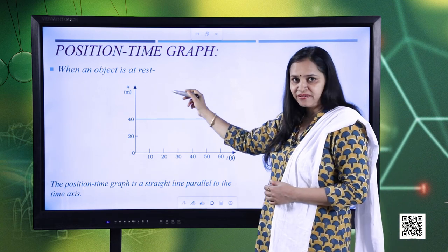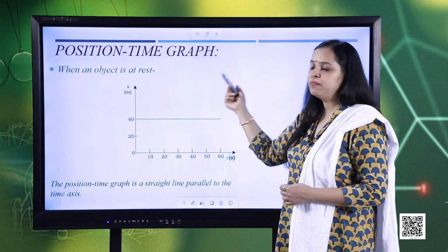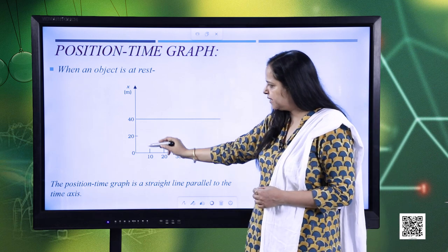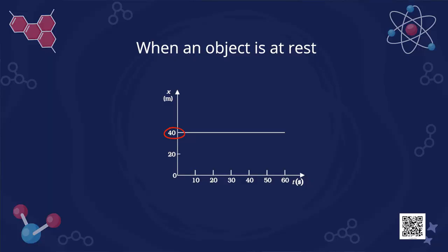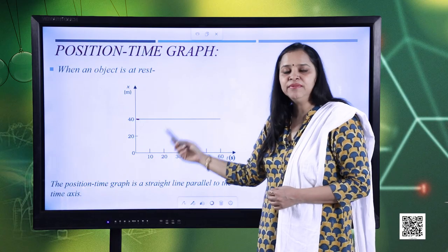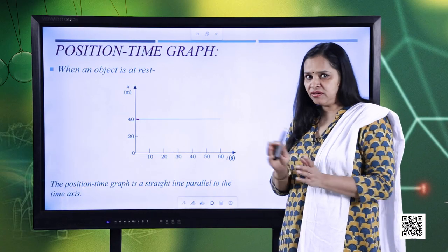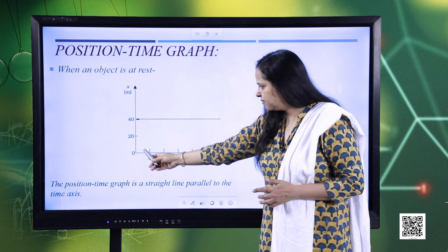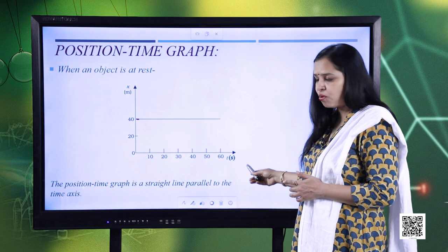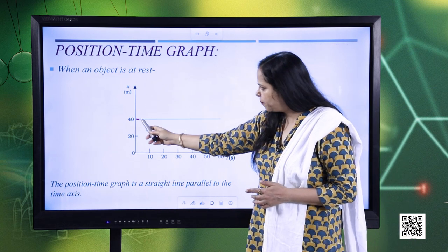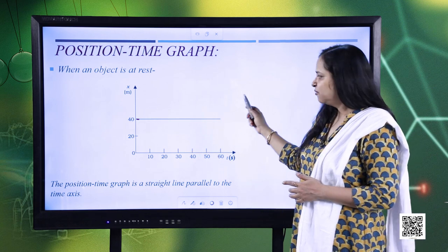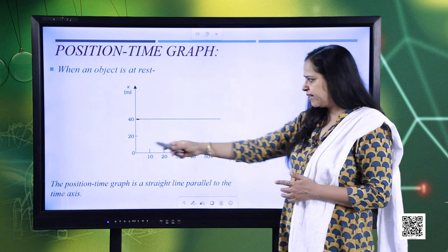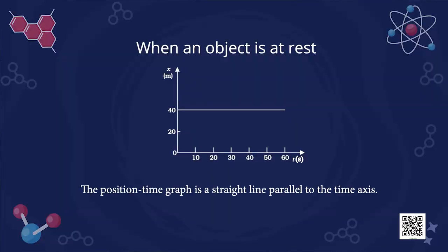When the object is at rest, what is the pattern of the position-time graph? Suppose initially the object is at a position of 40 meters from the origin. We mark 40 meters on the y-axis. With the span of time, since the body is at rest and not moving, its position will not change — it remains the same. The time is increasing — 0, 10, 20, 30, 40 seconds and so on — but the position remains the same. So we get a straight line parallel to the time axis. We can conclude that the position-time graph is a straight line parallel to the time axis for an object at rest.